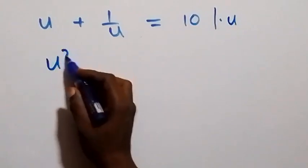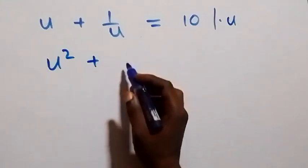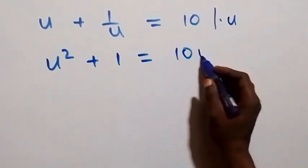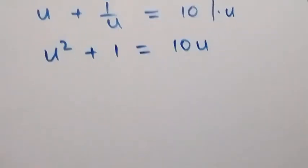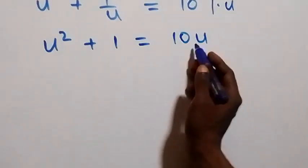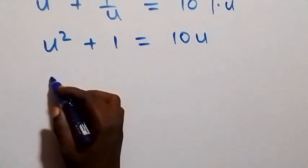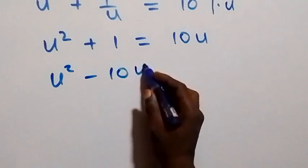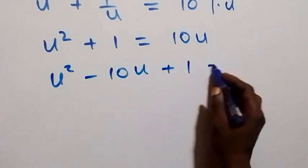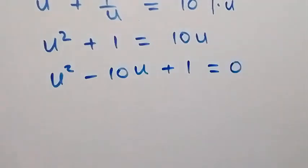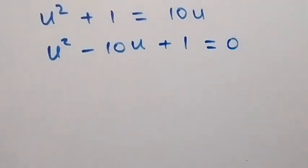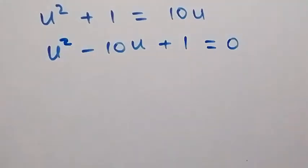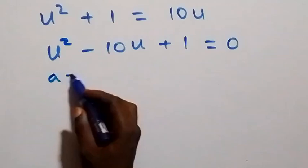This equation becomes u plus 1 over u equals 10. Multiplying through by u, we get u times u, that's u squared, plus u times 1 over u, that's 1, equals 10u. Taking everything to one side and rearranging, we have u squared minus 10u plus 1 equals 0.